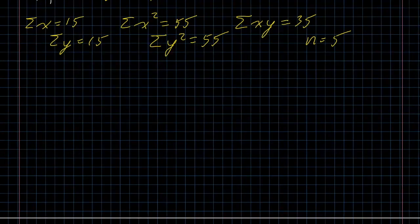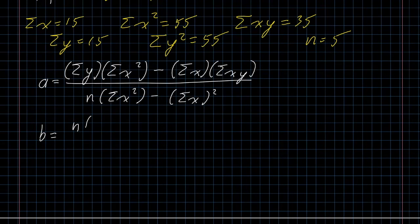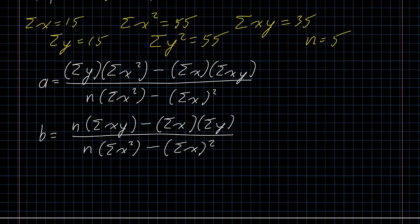These formulas look just as ugly as the formula for R. But the value of a is sigma y times sigma x squared minus sigma x times sigma xy over n times sigma x squared minus sigma x the whole thing squared. B is n times sigma xy minus sigma x times sigma y all over the same denominator, n times sigma x squared minus sigma x the whole thing squared.